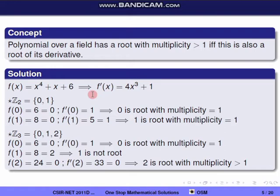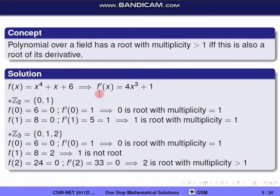For the first option, field of characteristic p=2, we take Z2 which has elements 0 and 1. Checking f(0): replacing x by 0 gives 6, and 6 mod 2 = 0, so 0 is a root of f(x). Now checking f'(0) = 1, which is not 0 mod 2, so 0 is not a root of f'(x). Therefore 0 is a root with multiplicity equal to 1.